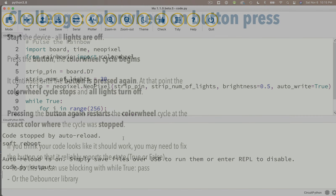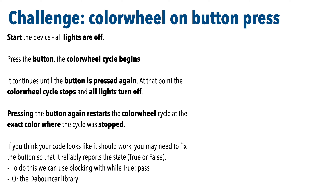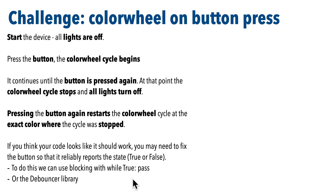Here's the challenge, and new CircuitPython programmers might struggle with this — but that's okay because this gives us a chance to show the problem and two solutions. Start the device: all lights should be off. When you press the button, the wheel cycle should begin at zero and continue until the button is pressed again. At that point the cycle should stop and all lights turn off. Pressing the button again should restart the cycle at the exact color where it was stopped. If your code looks right but isn't working, you might need to fix the button so it reliably reports true or false.